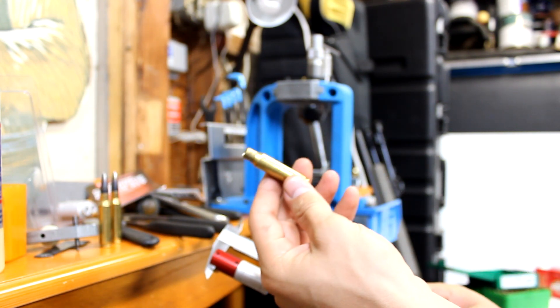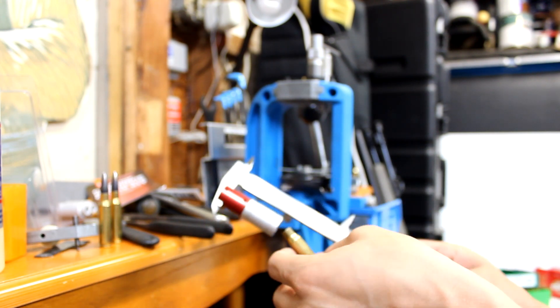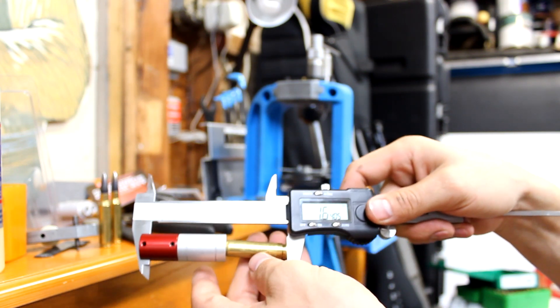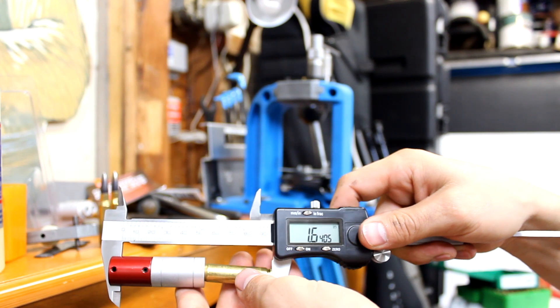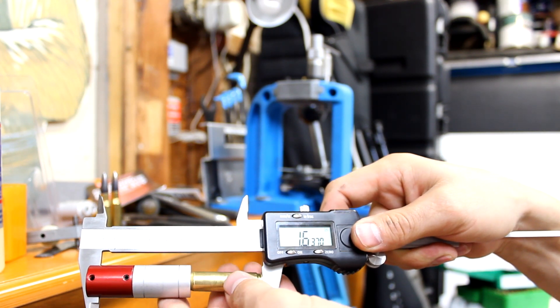This is from a round that I just pulled the bullet out of. You can see that in one of my other videos. This one wouldn't load in my firearm and that's probably why. You can see my headspace here is 1.630.